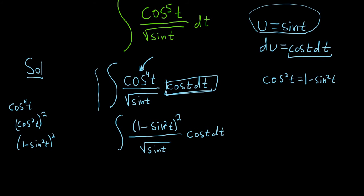So this is going to be equal to parentheses 1 minus u squared over the square root of u. And what's left, all of this that's left, is simply du.